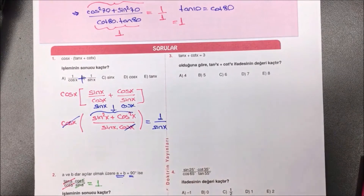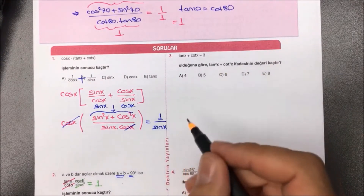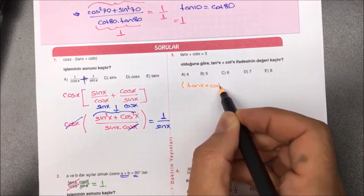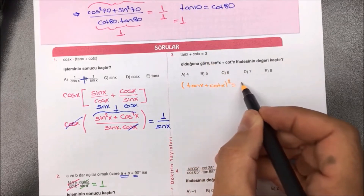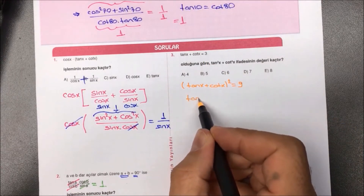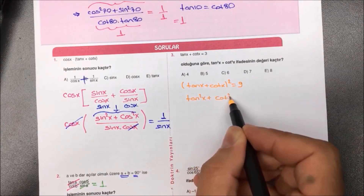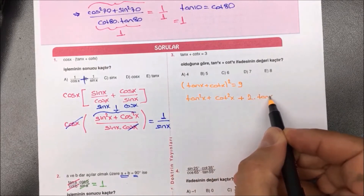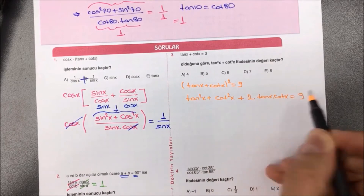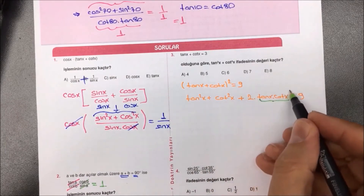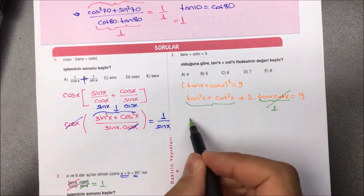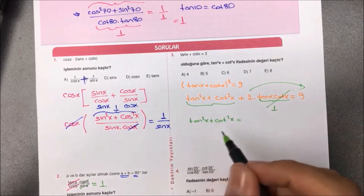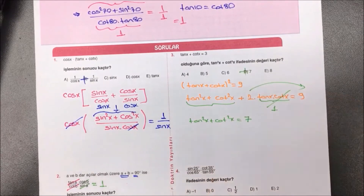Üçüncü soruda tan(x) + cot(x) = 3 verilmiş; tan²(x) + cot²(x) sorulmuş. Her iki tarafın karesini alıyoruz: (tan x + cot x)² = 9 açılınca tan²x + 2·tan(x)·cot(x) + cot²x = 9 gelir. tan(x)·cot(x) = 1 olduğu için 2·1 = 2'yi karşıya atarsak tan²x + cot²x = 9 − 2 = 7 olarak bulunur.